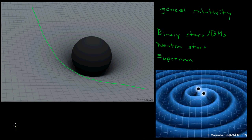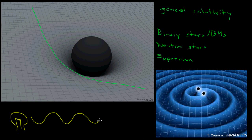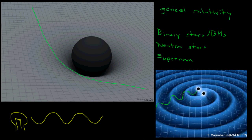In the same way that a light source like a light bulb gives off electromagnetic waves — which have an amplitude, a wavelength, a frequency, and a polarization — gravitational waves also have an amplitude, a wavelength, a frequency, and a polarization. So if we can measure these gravitational waves emitted by various sources, in the same way that light contains information about the source that emitted it, these gravitational waves also contain information about the different systems that produced them.